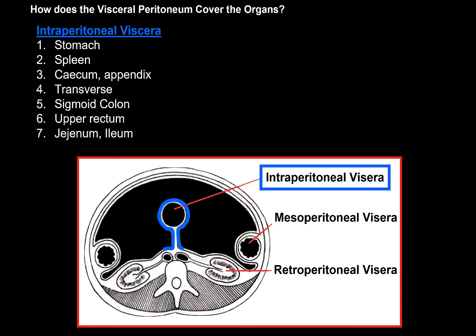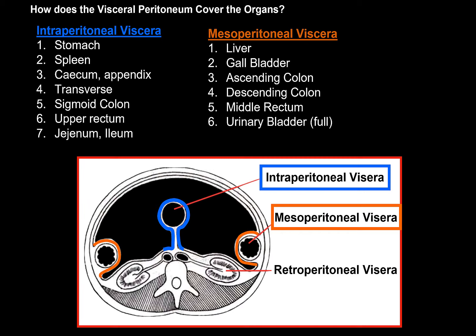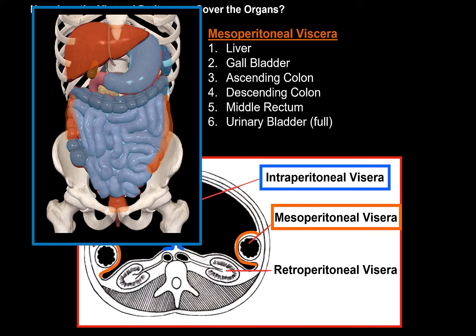Another type are the mesoperitoneal organs, which are internal organs covered by the visceral peritoneum from three different sides. These include the liver — due to the bare area — the gallbladder, the ascending and descending colon, the middle part of the rectum, and the urinary bladder when it's full.